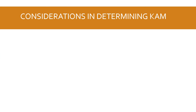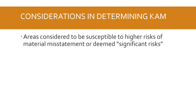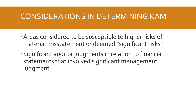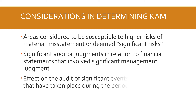The considerations for the auditor in determining key audit matters are: number one, areas susceptible to higher risks of material misstatement — what we call significant risks; second, significant auditor judgments in relation to financial statements involving significant management judgment; and third, the effect on the audit of significant events or transactions that occurred during the audit. The operative term throughout is 'significant.'